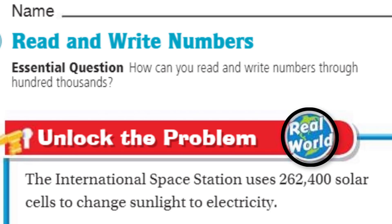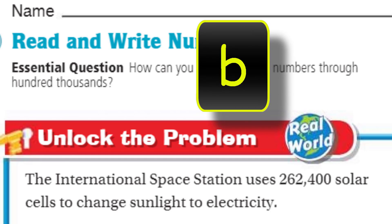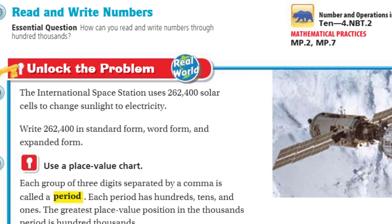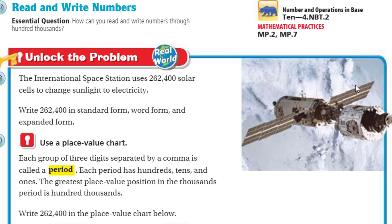We need to unlock the problem — real world, my friends! Here we have the International Space Station, also known as the ISS. It uses 262,400 solar cells to change sunlight to electricity. That seems like a lot. So we need to write 262,400 in standard form, word form, and expanded form, using a place value chart.